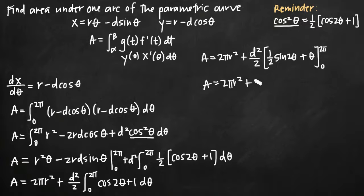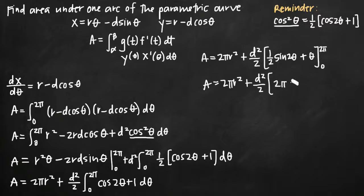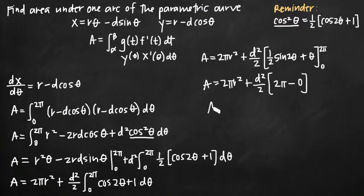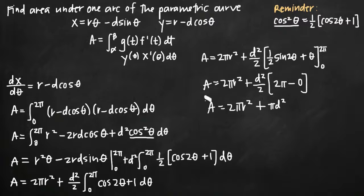So that gives us 2 pi r squared plus d squared over 2 times: plugging in 2 pi, sine of 2 pi is 0, and the theta term gives 2 pi. Then we subtract what we get at 0 — sine of 0 is 0, and 0 for the theta term — so that's just 0. Our result is 2 pi r squared plus pi d squared, because the 2's cancel and we're left with pi d squared. This is the area under one arc of the parametric curve defined by these two parametric equations.